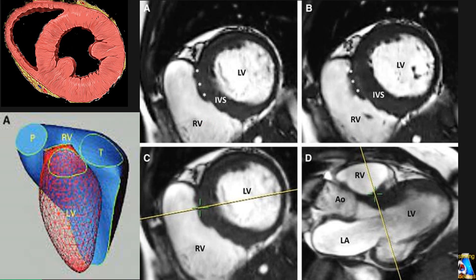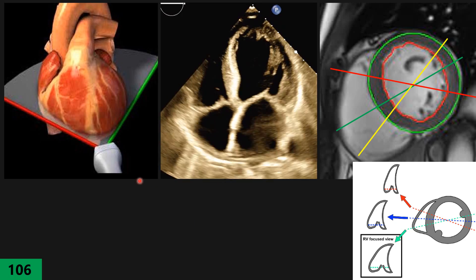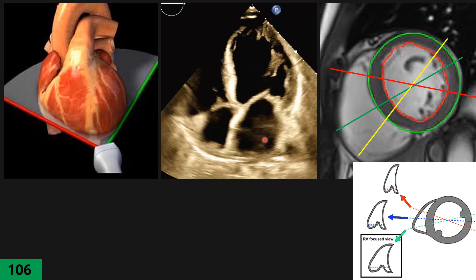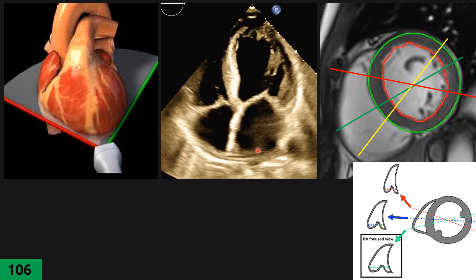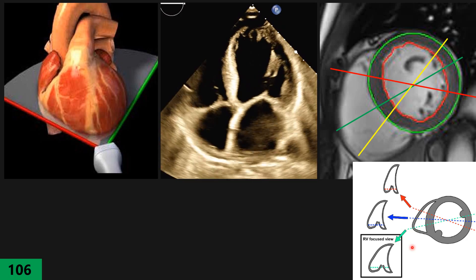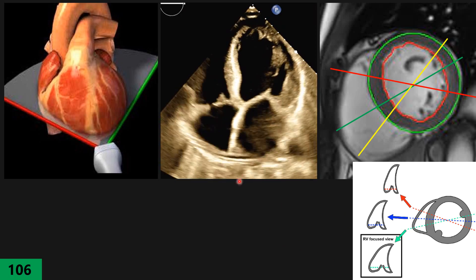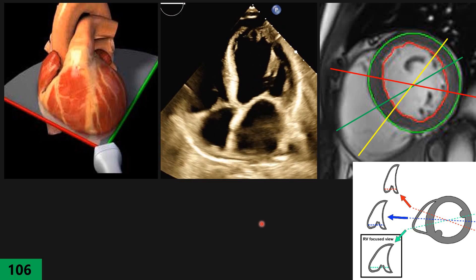Now let's look at the definition of the RV focused view from the true societies. As I said, apical four is the view that has all four chambers at largest diameter — that is my definition. But the American Society of Echocardiography and British Society of Echocardiography have a slightly different definition, especially about the RV focused view.